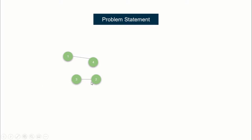For example, suppose this was the graph at some point. We have to print both things: how many connected components we have - we have two - and what is the size of the largest connected component, which is also two. Now suppose there's a query to add an edge between these two nodes. Now the number of connected components is only one, a single connected component, with a size of four. So we'll print one and four.